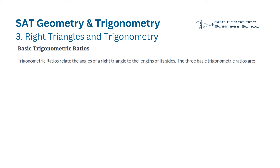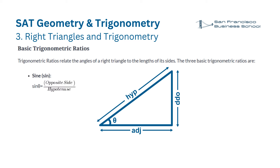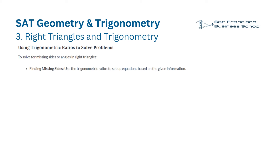Basic trigonometric ratios relate the angles of a right triangle to the lengths of its sides. Sine of an angle equals opposite over hypotenuse. Cosine equals adjacent over hypotenuse. Tangent equals opposite over adjacent. These ratios are fundamental for solving right triangle SAT geometry and trigonometry problems. To find a missing side, use the ratios to set up equations — for example, if sine θ equals 0.5 and the hypotenuse is 10, the opposite side equals 0.5 × 10 = 5.